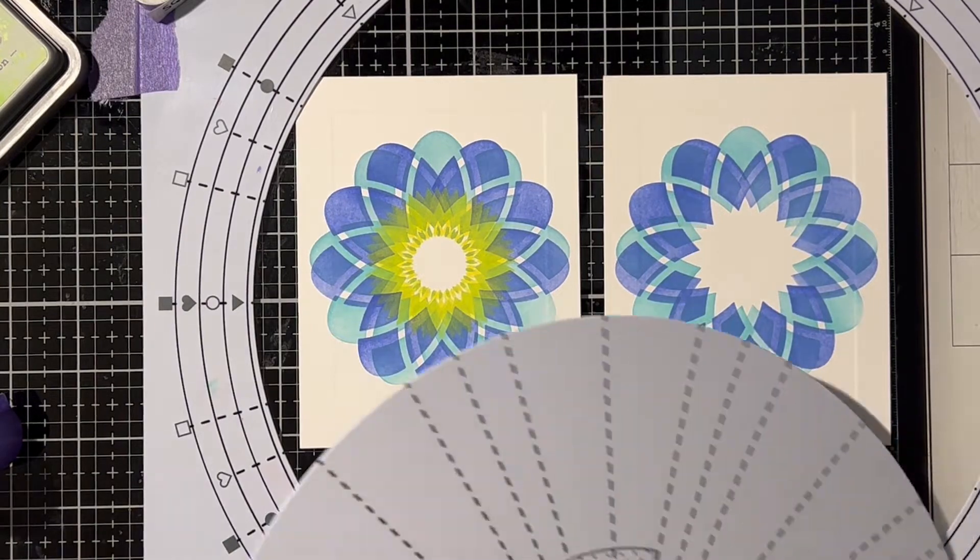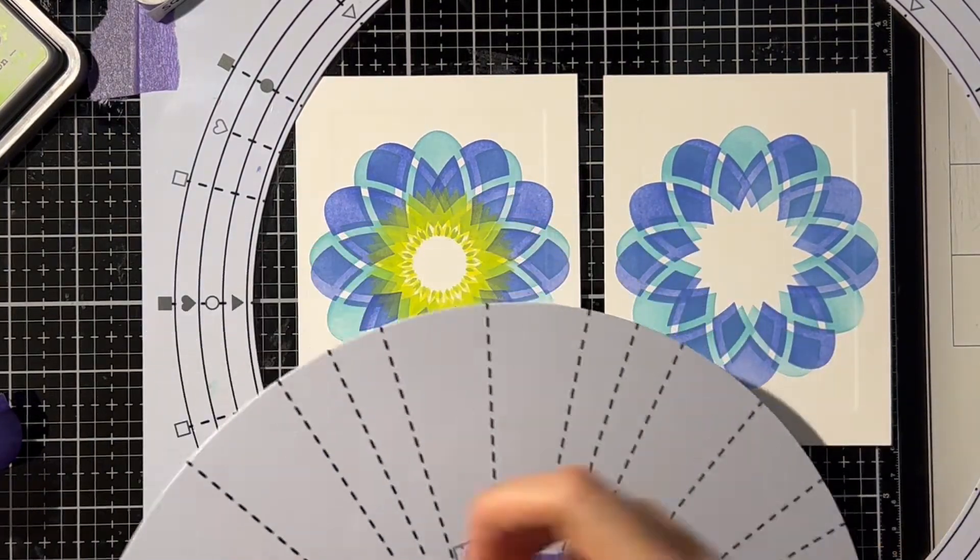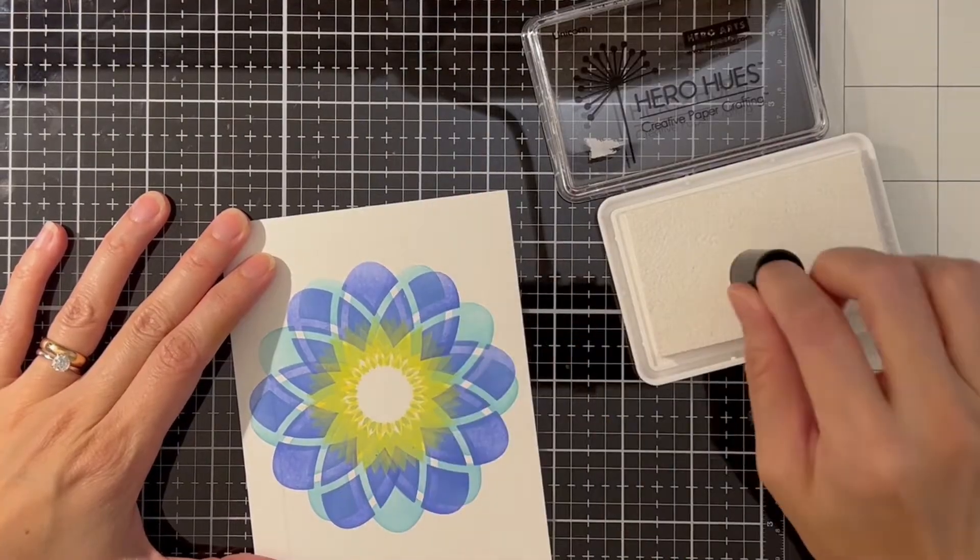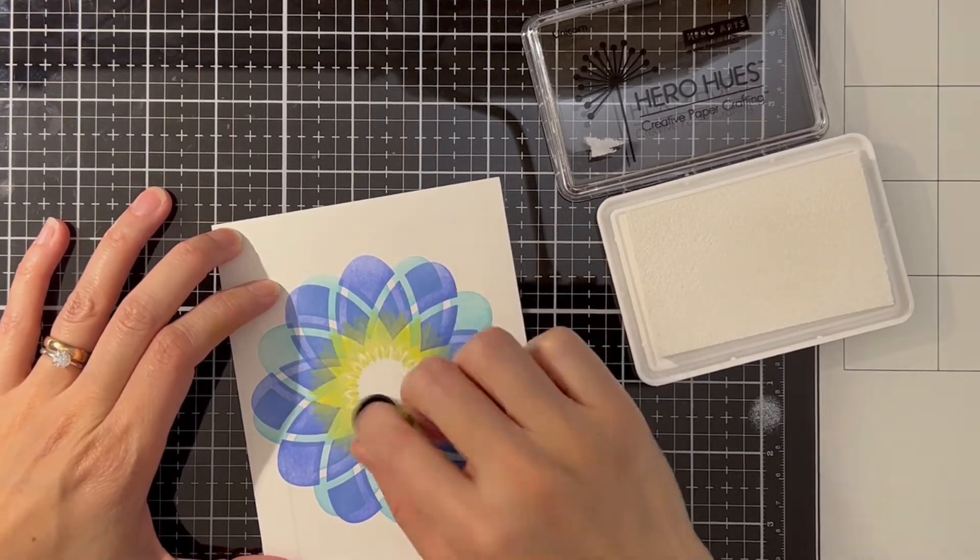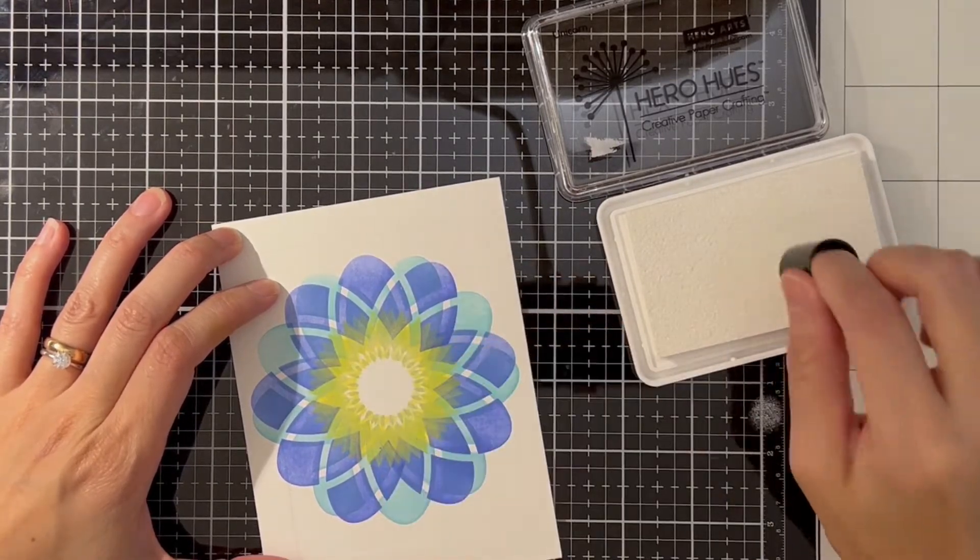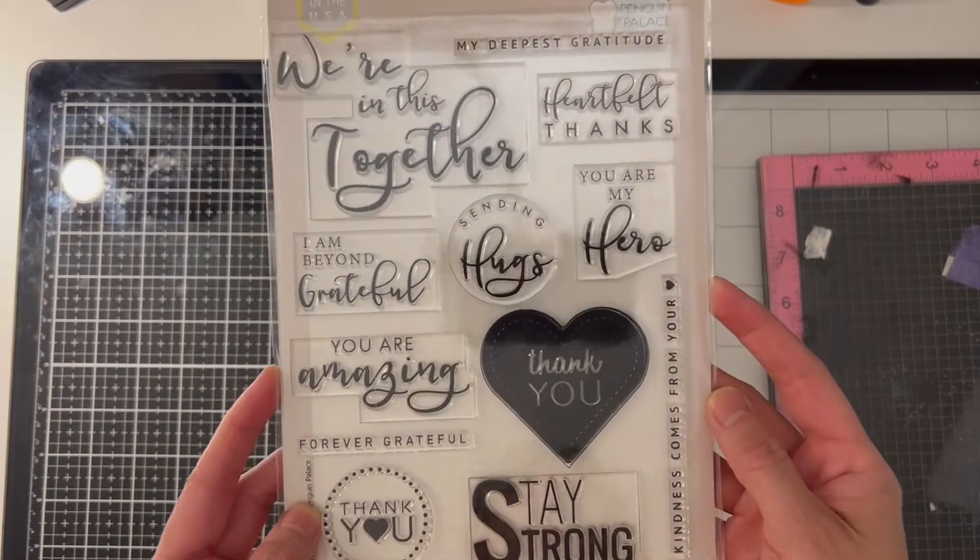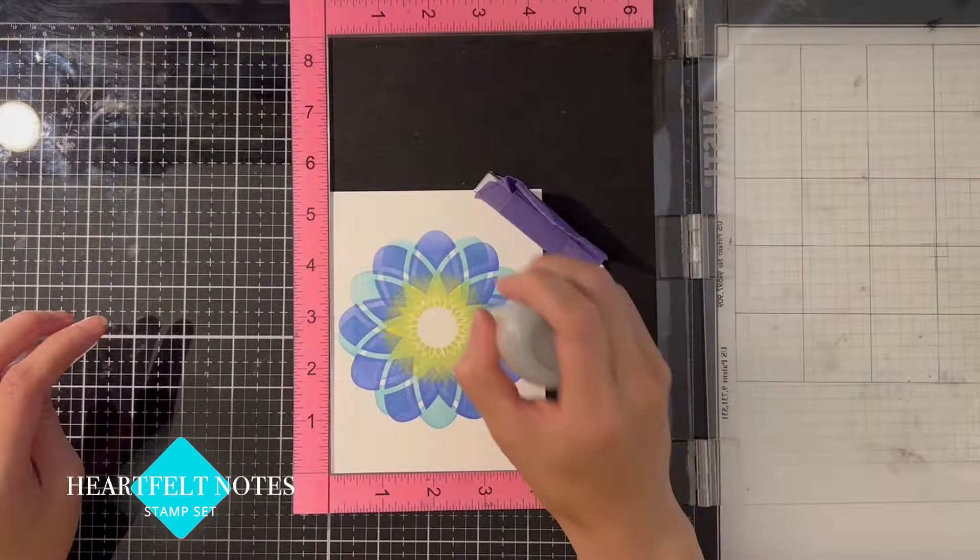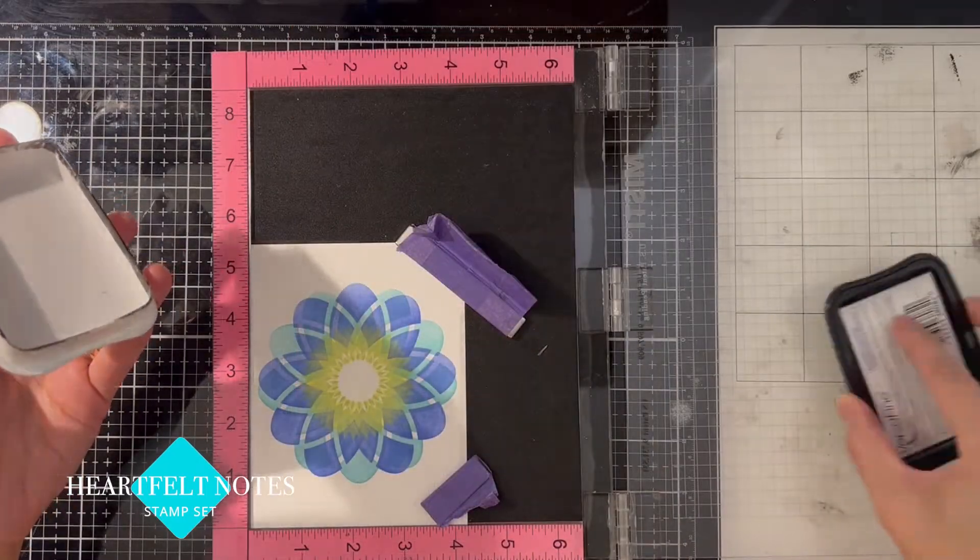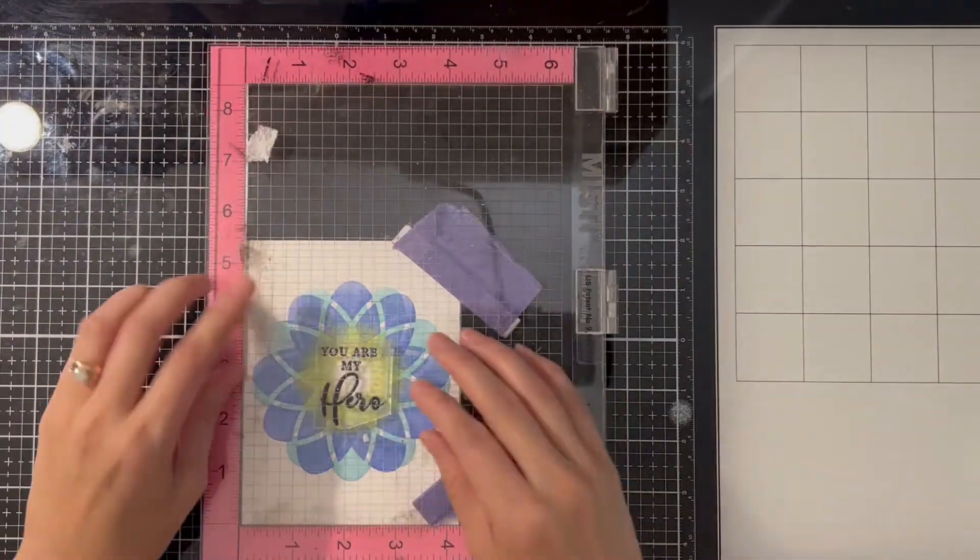For my first card, I applied some white pigment ink in the center to give it some highlights so that when I stamp my sentiment over it, it's going to stand out more. I stamped an image from heartfelt note stem set with VersaFine Onyx black ink, and then clear heat embossing it.